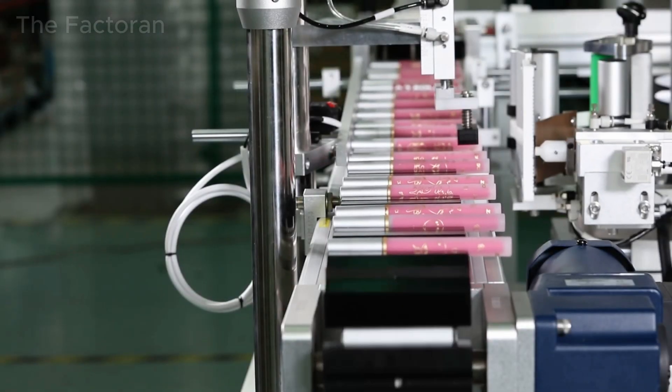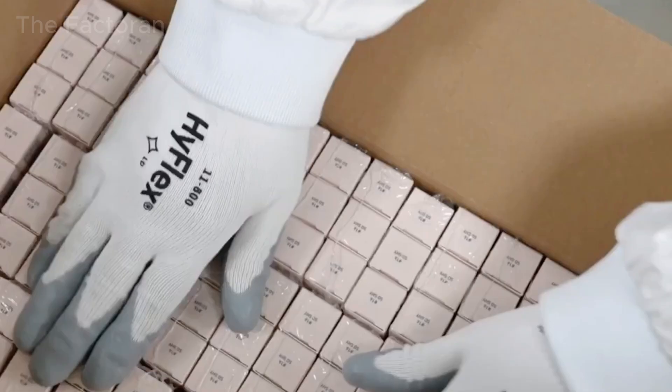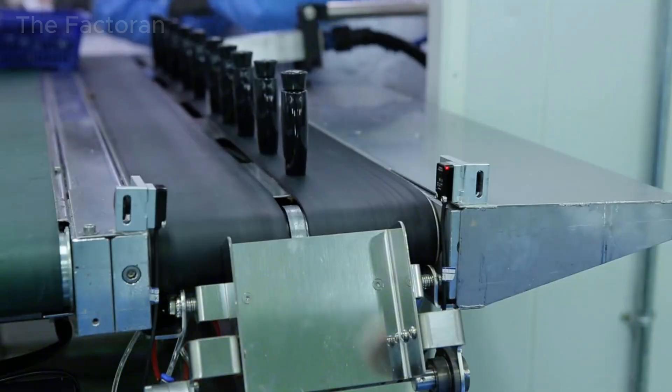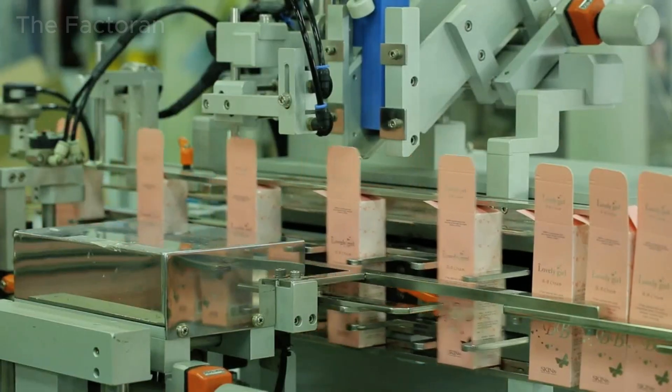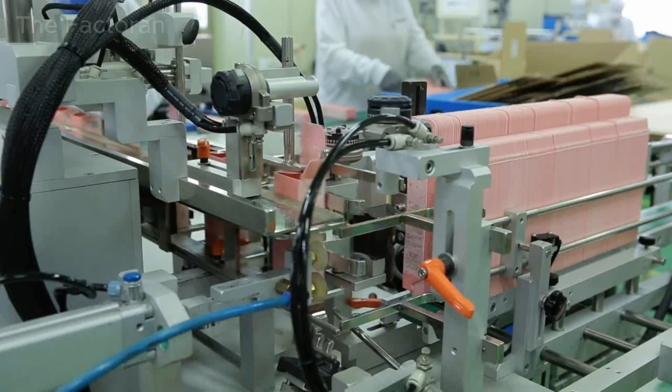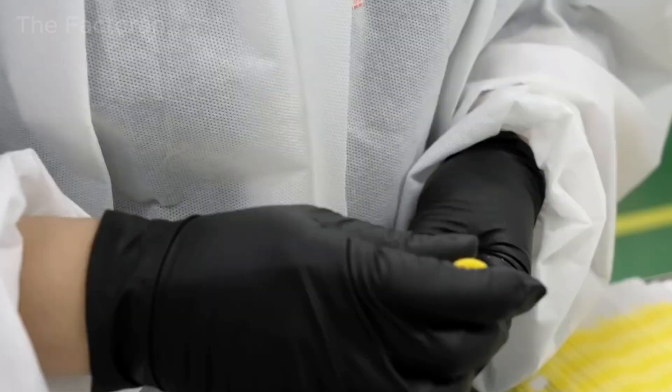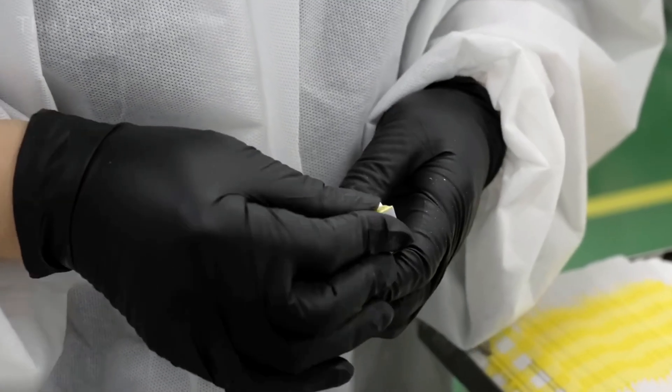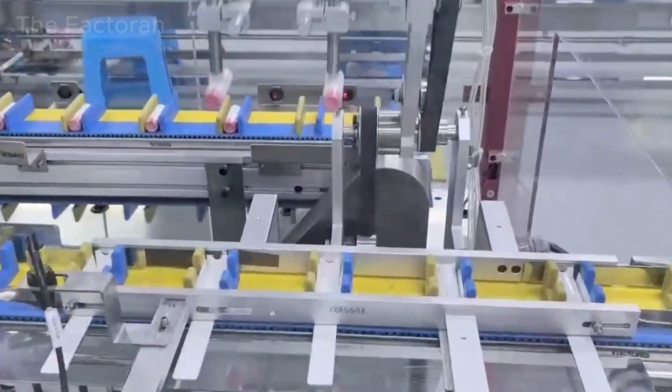After capping and final visual inspection, the lipsticks are transferred to the final packaging area. First, each lipstick is placed into its individual package according to the design of each brand. This primary packaging layer both protects the product and serves as the brand's visual identity on retail shelves.